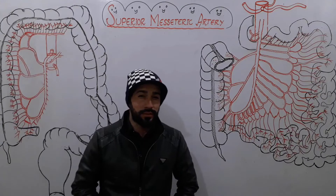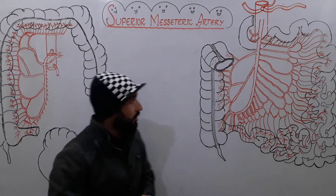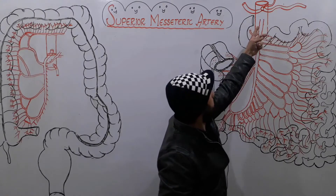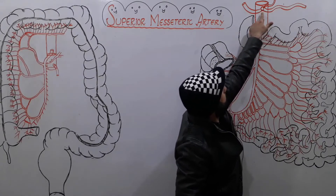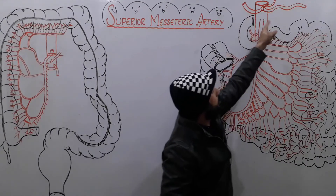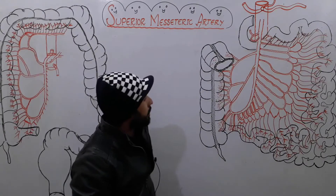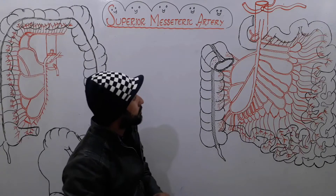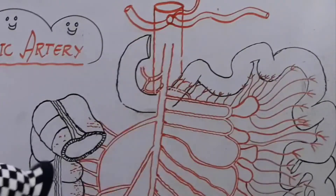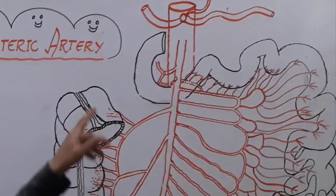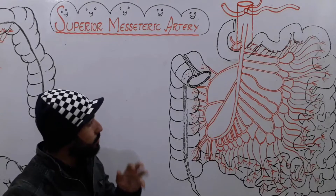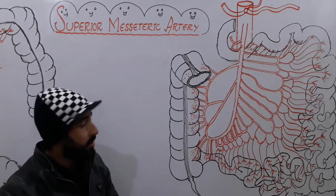In the previous lecture I recorded about the branches of the celiac trunk. You can see here we have drawn the abdominal aorta, and this branch is our celiac trunk or celiac artery. From the celiac artery there were three branches: the left gastric artery, the splenic artery, and the common hepatic artery. Those branches have already been discussed in the previous lectures.